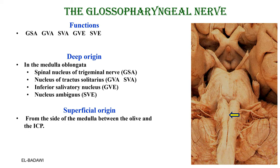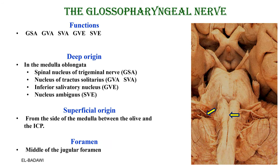The superficial origin of the glossopharyngeal is from the side of the medulla between the olive and the inferior cerebellar peduncle — this is a common superficial origin for the 9th, 10th, and 11th nerves, all three from the same side. All three — the 9th, 10th, and 11th — exit from the middle part of the jugular foramen.